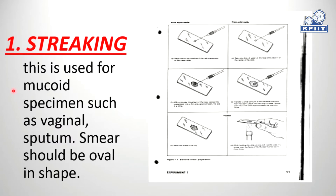Smear preparation. The first method is streaking. This is used for mucoid specimens such as vaginal and sputum. The streaking method is used for vaginal and sputum smears.